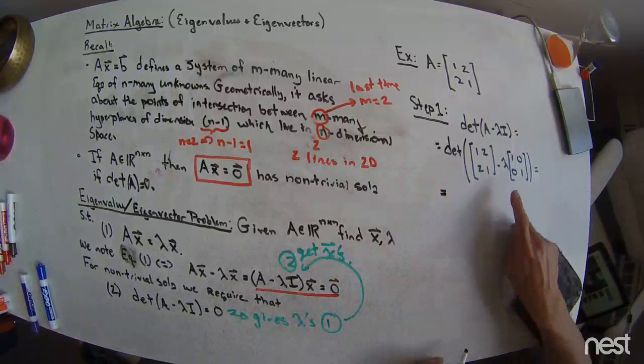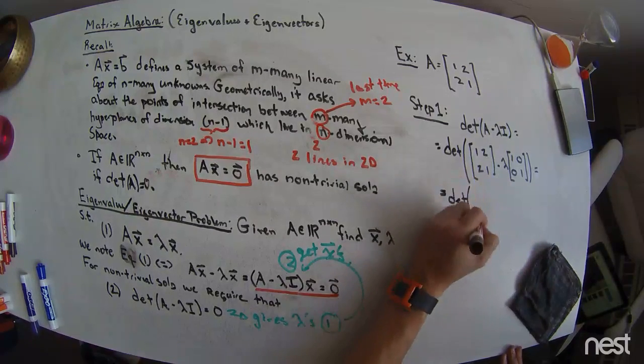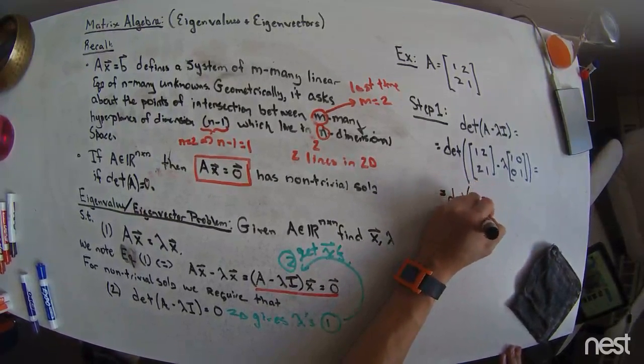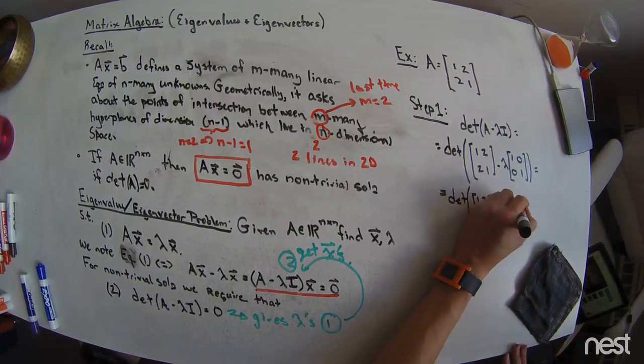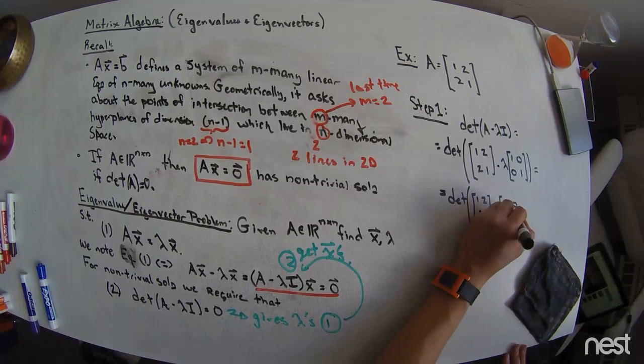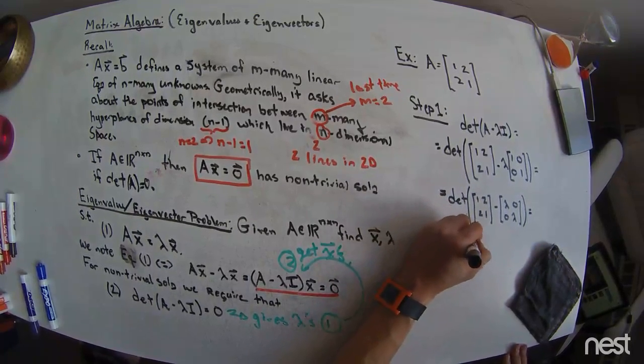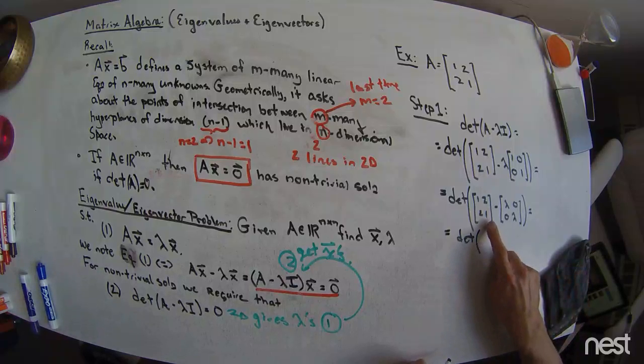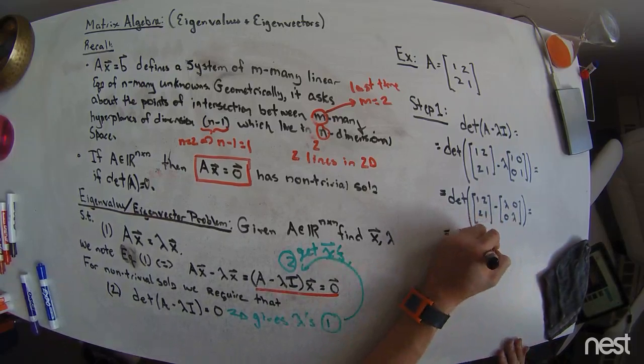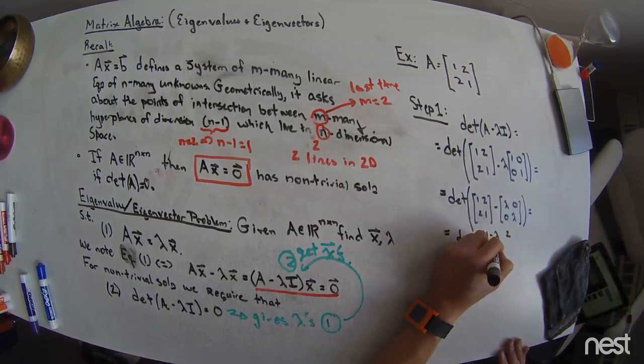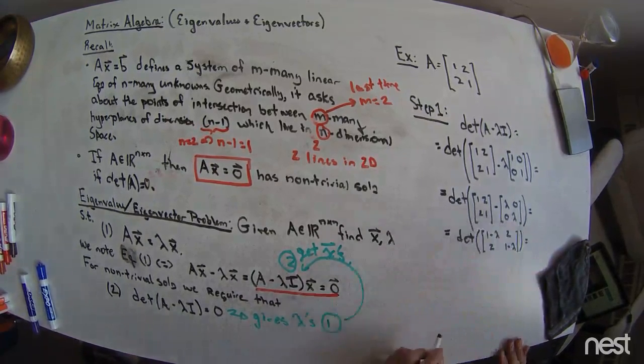And so, remember that lambda will multiply onto this matrix by multiplying every single cell element by that lambda. But since the only non-zero elements are on the diagonal going from the upper left to the lower right, I only have lambdas right here. And so, now I have the determinant of the A matrix affected by this subtraction by subtracting lambda off the main diagonal. So, I will have a 1 minus lambda, a 2, a 2, a 1 minus lambda.